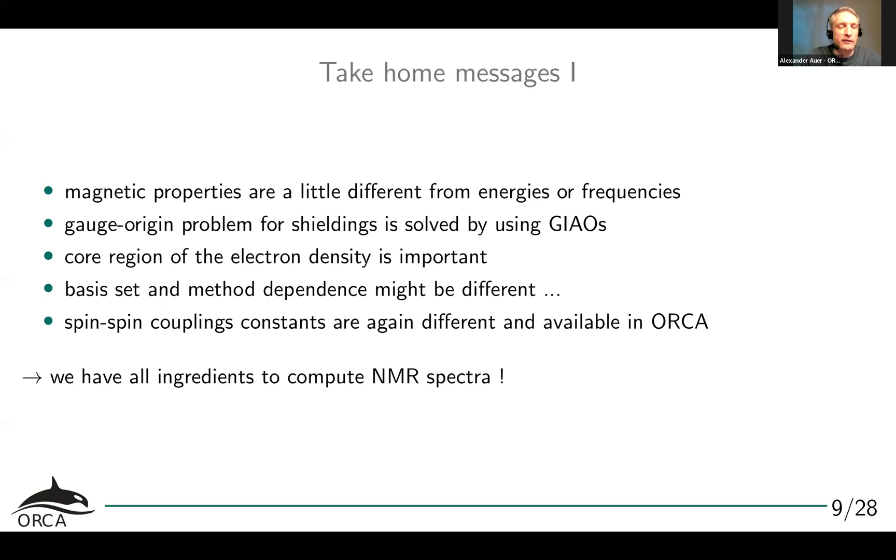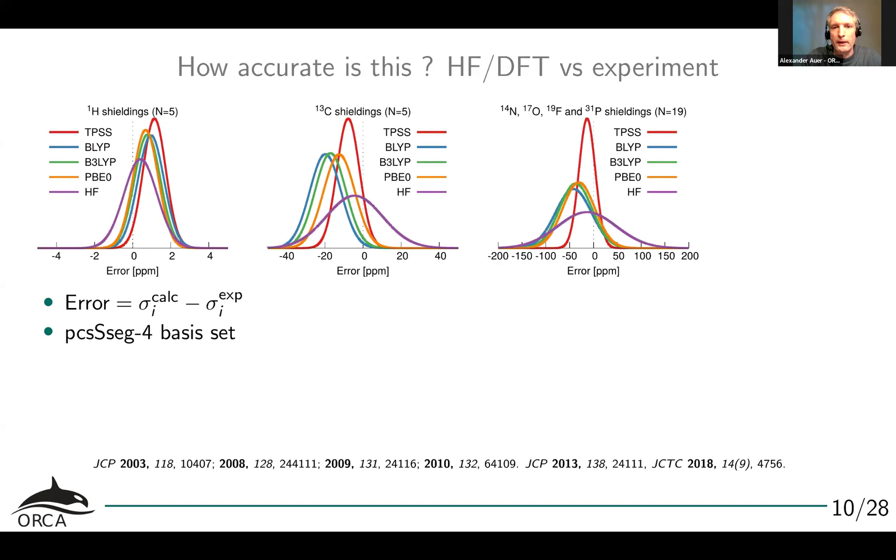So I went to the literature and looked for some benchmarks. These are things that Georgi Stoychev has been doing, because the first question that we need to answer is if we do these calculations, how accurate are the results. Here we see, for example, carbon-13 shieldings and proton shieldings for different functionals. You can see typically for carbon-13 we get errors of 10 to 20 ppm, for hydrogen 1 to 2 ppm. The spectral range for different nuclei is different. I always highly recommend to look at the literature for benchmarks so you get a feeling for how accurate different methods are.